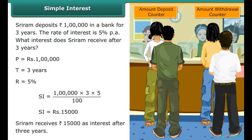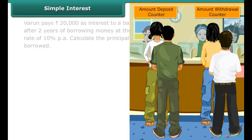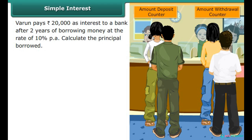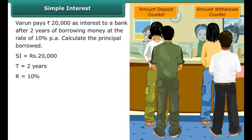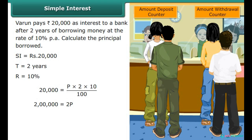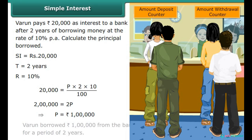Now let us calculate the principal. Varun pays rupees 20,000 as interest to a bank after 2 years of borrowing money at the rate of 10% per annum. Calculate the principal borrowed. Interest is rupees 20,000, time period is 2 years, rate of interest is 10%. Substituting in the formula: 20,000 equals P into 2 into 10, whole upon 100. Solving, the principal equals rupees 1 lakh. Varun borrowed rupees 1 lakh for a period of 2 years.